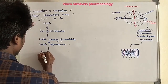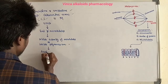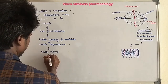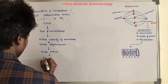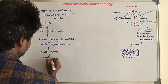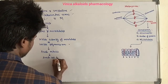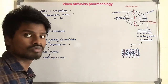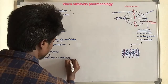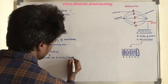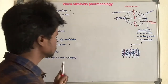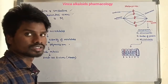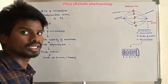As a result of inhibiting microtubule polymerization, cell division is arrested. The cell division is arrested at metaphase. This is the mechanism of action of the Vinca Alkaloids.